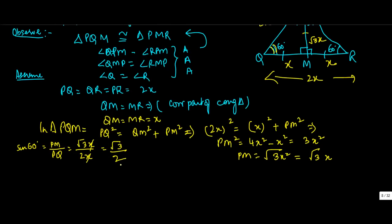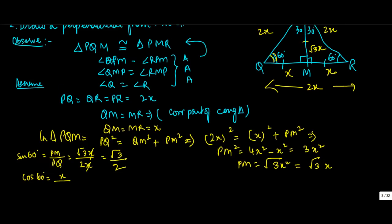Similarly, you will have cos 60 degrees equals to QM, which is X, upon PQ, which is 2X, giving 1 upon 2.